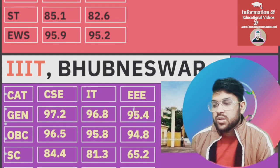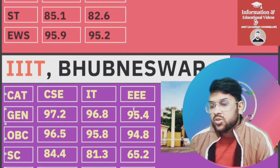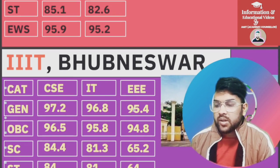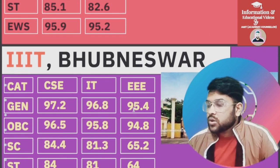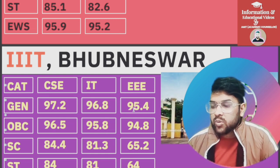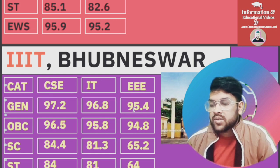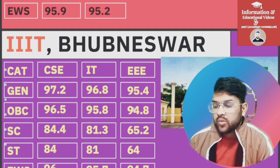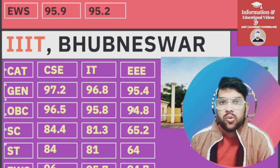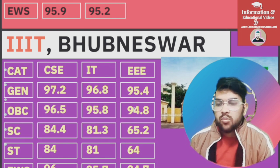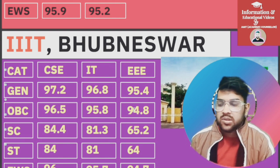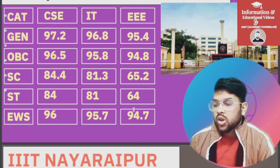For IIIT Women's — for CSC: IT and Triple E branches you can check slide-wise. For CSC: General 97.2, OBC 96.5, SC 84.4, ST 84, EWS 96 percentile.